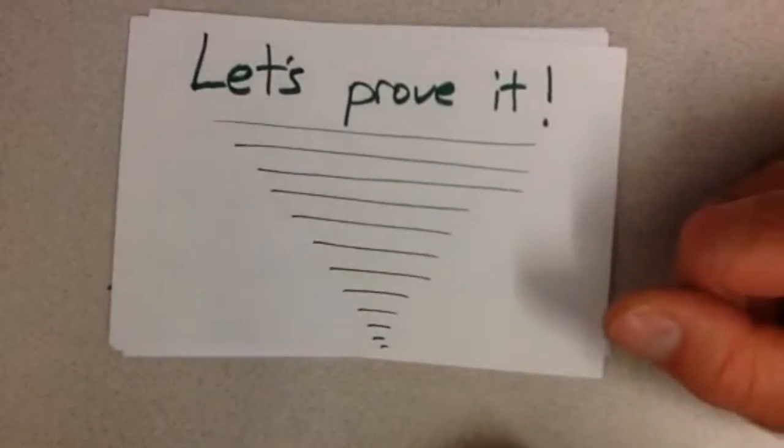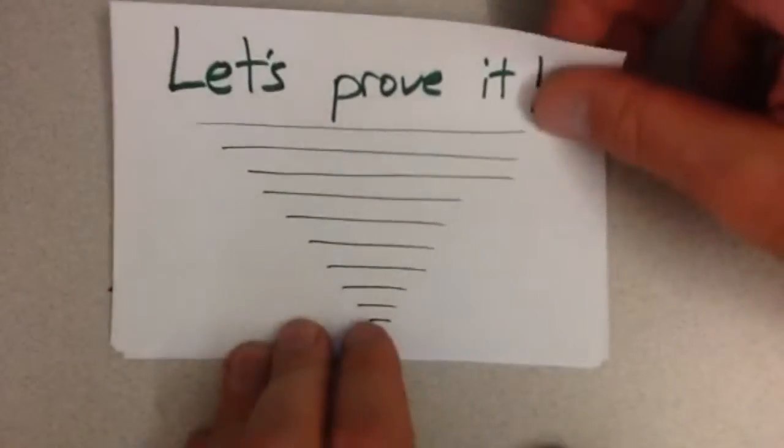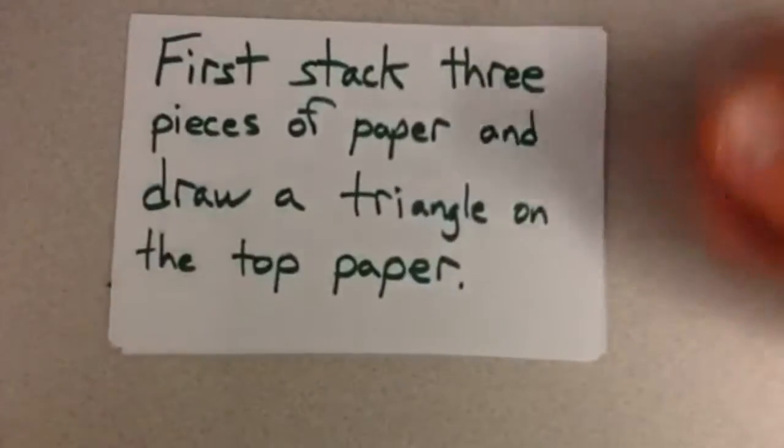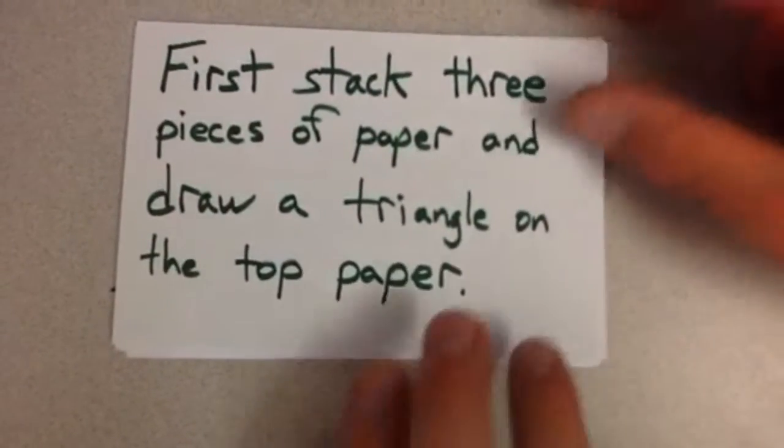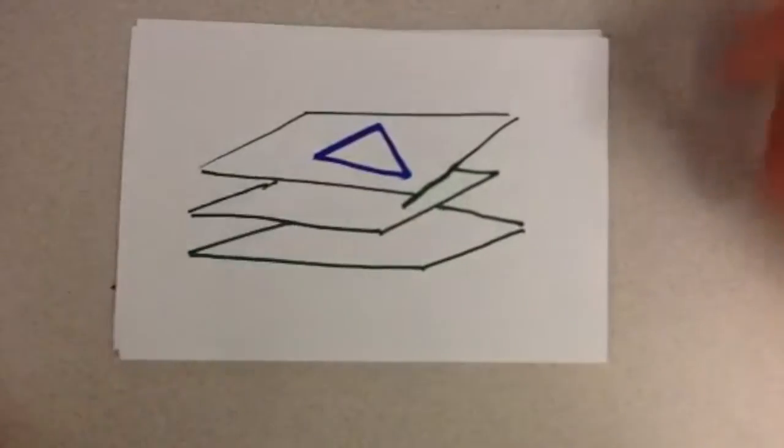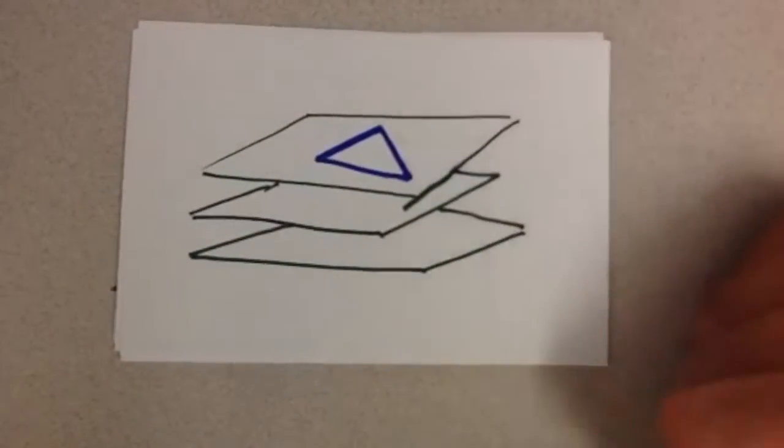Okay, how can we do this? Well, let's prove it. So here's one proof of that. First, stack three pieces of paper and draw a triangle on the top paper like this. Three pieces of paper, draw a triangle on the top.